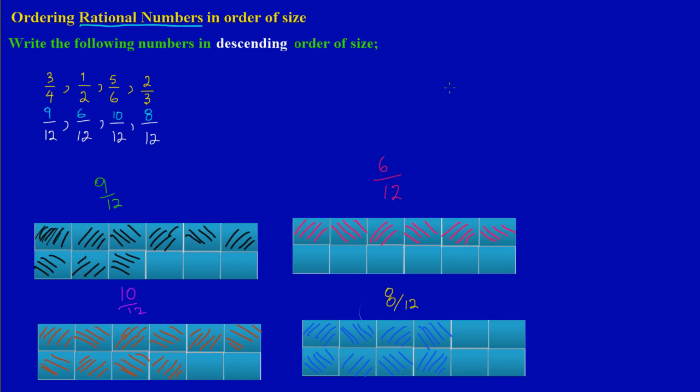Well, in the previous video we looked at this same exact example. However, we looked at writing these numbers—three quarters, a half, five over six, and two thirds—in ascending order of size.